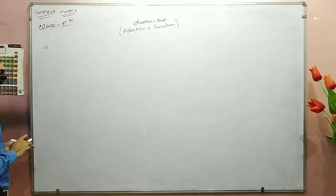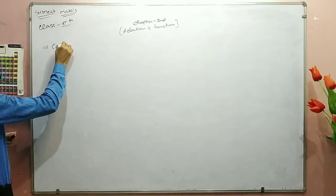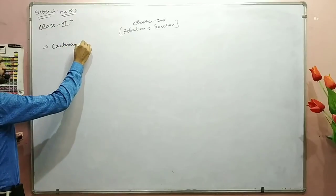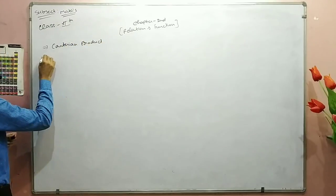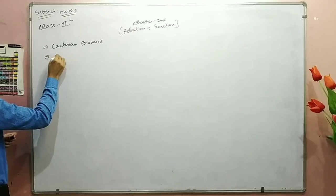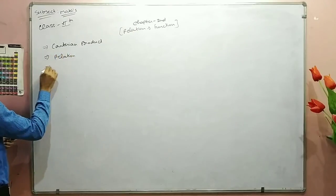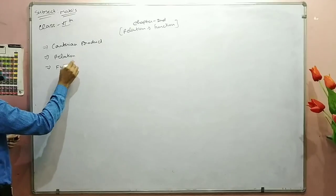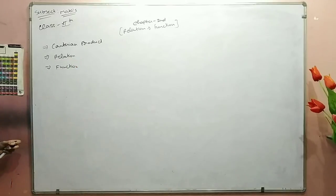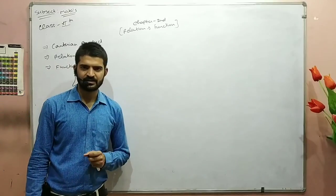First of all, we will discuss Cartesian product. Then we will discuss relations, and the last part of the lecture is Functions. Because relations and functions are all based on Cartesian products. So what we will discuss in this lecture is Cartesian product.